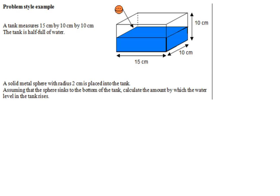A tank measures 15 centimetres by 10 by 10. The tank is half full of water. Every single word is relevant here. Remember, they're going to try and hide things, so you must make sure that you're reading every single word here. So that would be 5 centimetres. A solid metal sphere with radius 2 centimetres is placed into the tank. Assuming that the sphere sinks to the bottom of the tank, right there, calculate the amount by which the water level in the tank rises.